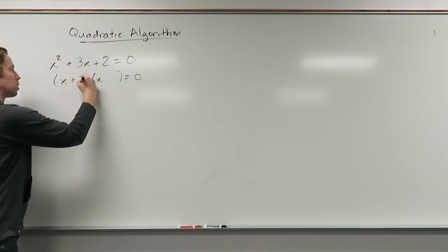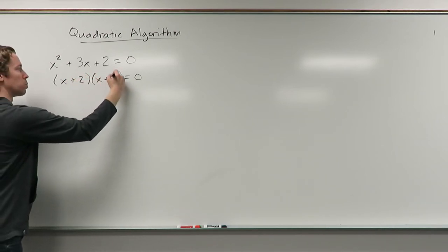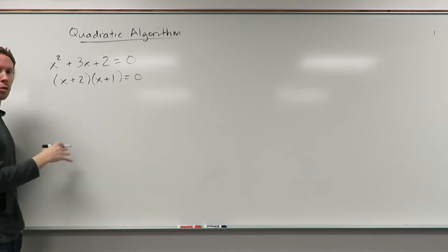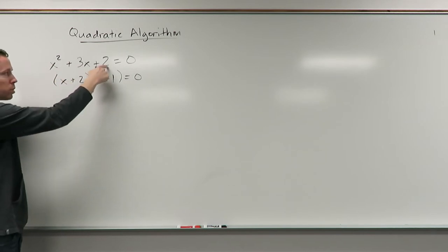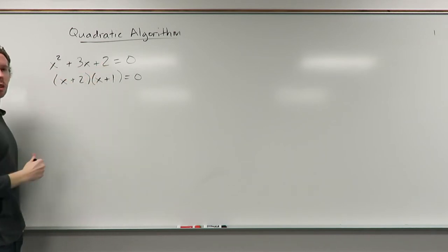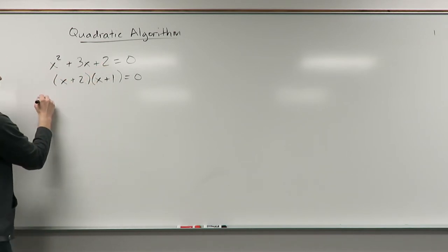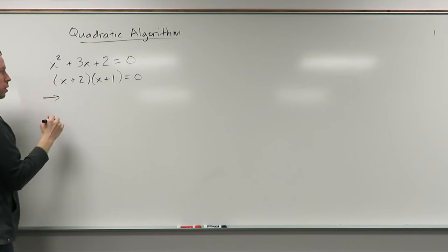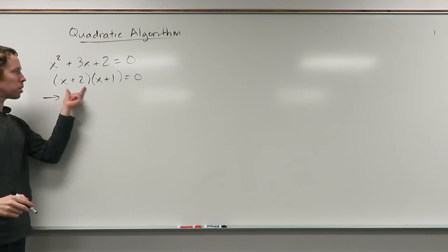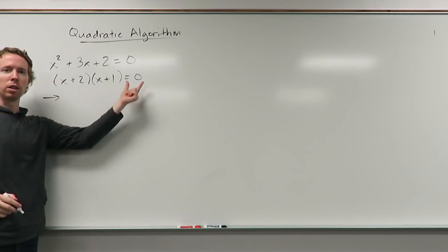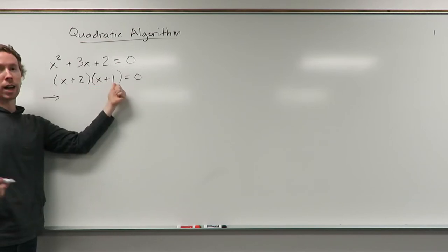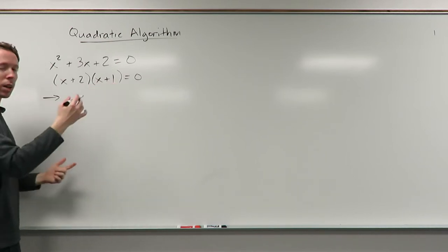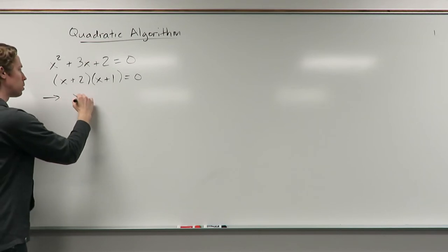x plus 2 times x plus 1. If you multiply this out and FOIL it, you will get back up to here because 2 times 1 is 2 and 2 plus 1 is 3. Once you get this, since you have one number times another number equals 0, that means that one of these two numbers has to be 0. So just set both of them equal to 0 and solve them.